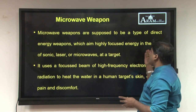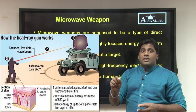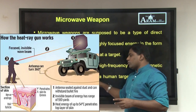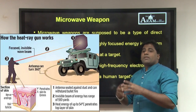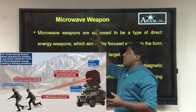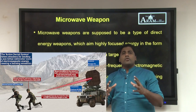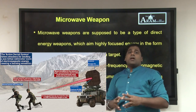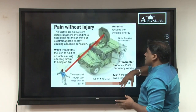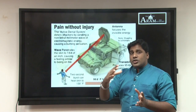Microwave weapons are supposed to be a type of directed energy source, directly targeting the skin of humans. When this particular energy source hits human skin, it heats the water in the skin and causes immense pain. Please understand that this type of microwave weapon does not kill humans, but it causes huge pain, which itself is a major deterrence in warfare. This particular type of weapon is reported to have been used in the India-China hostile regions.